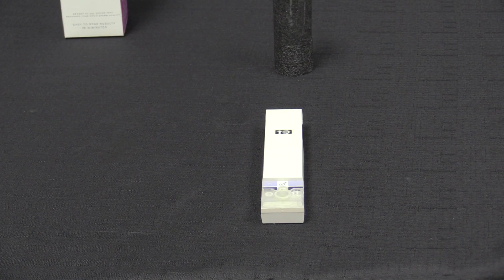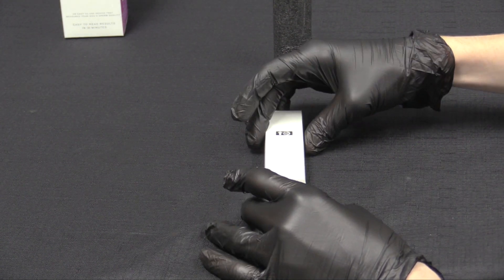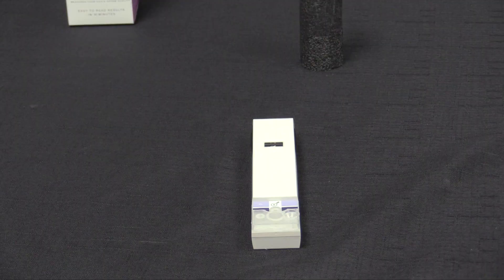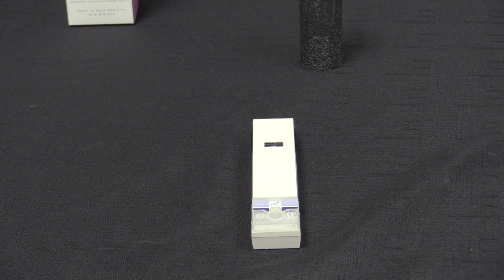Okay so after 30 minutes the next step is to take the slider, secure the test cartridge and bring it all the way back until you hear a click. You can now look at the test window here and interpret the test color result.